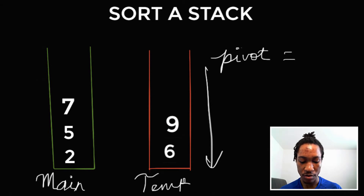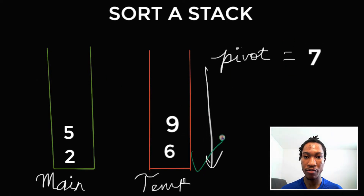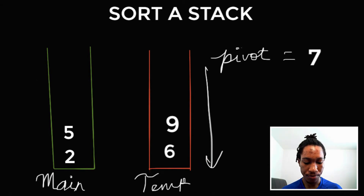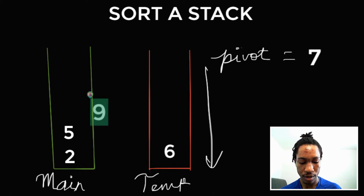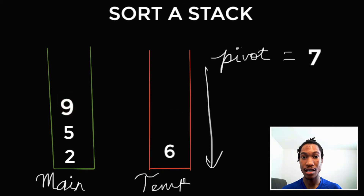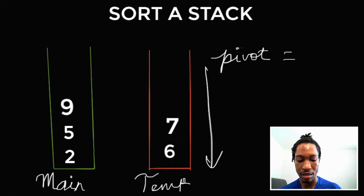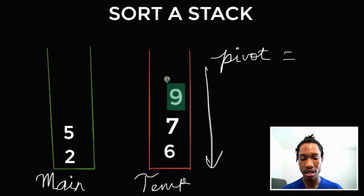Our pivot value becomes 7. We order the elements in the temporary stack based on the pivot value, iterating through it. Whenever we get to a number greater than the pivot value, we pop it out of the temp stack and push it into the main stack. We get to 9 — 9 is greater than 7, so we take it out. We get to 6 — 6 is less than 7, so 6 is in its rightful position. We take 7, put it in, and then put 9 back in, since it was greater than 7.